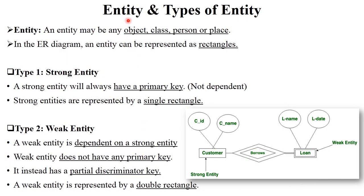The first component is entity. An entity can represent any particular object, class, person, or place. Entity is always represented by rectangles. For example, in this diagram, customer and loan are entities. An entity represents a particular object or particular information.